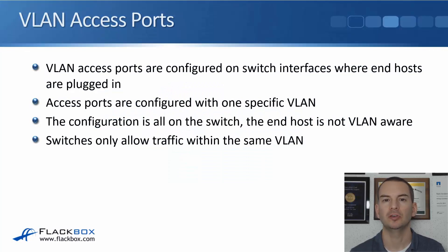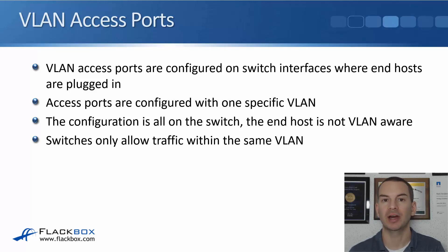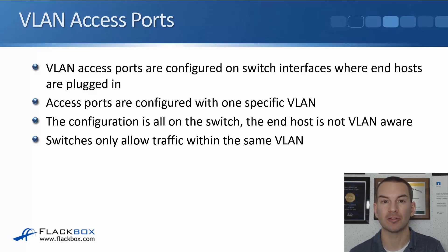In this lecture, you'll learn about VLAN access ports and how to configure them. Access ports are configured on switch interfaces where end hosts are plugged in, and they are configured with one specific VLAN. For example, an engineering PC gets plugged into the switch and that port is configured as an access port in the engineering VLAN. The configuration is all on the switch — the end host is not VLAN-aware and doesn't even know that the VLAN exists.